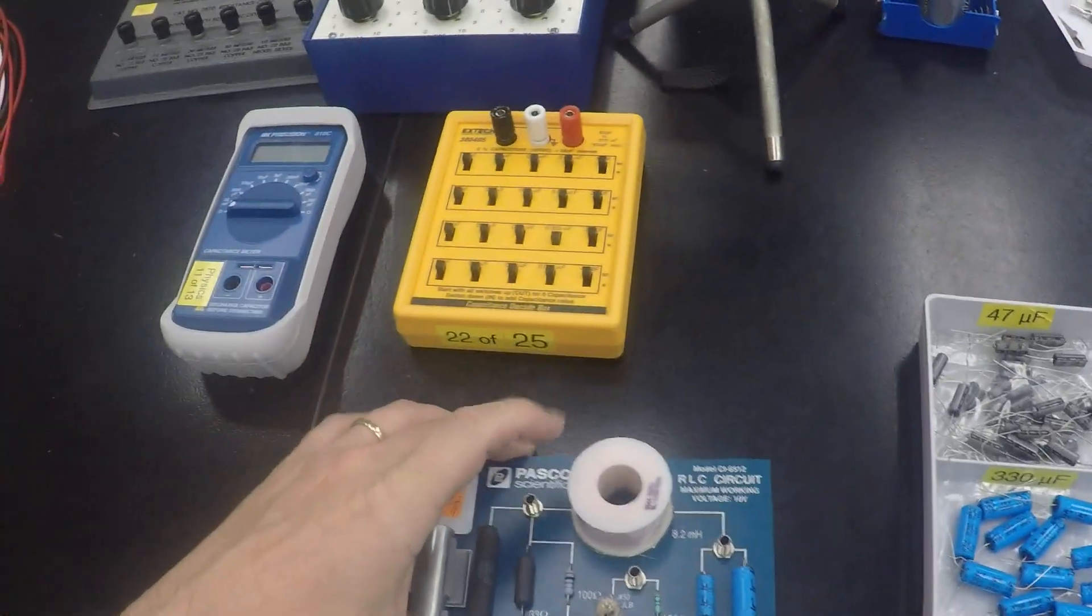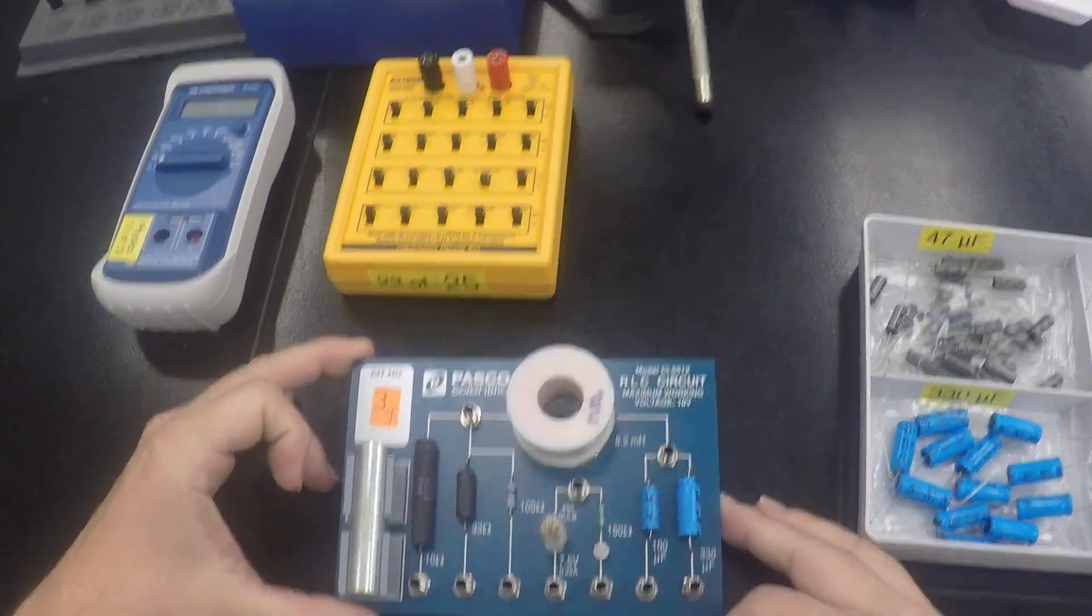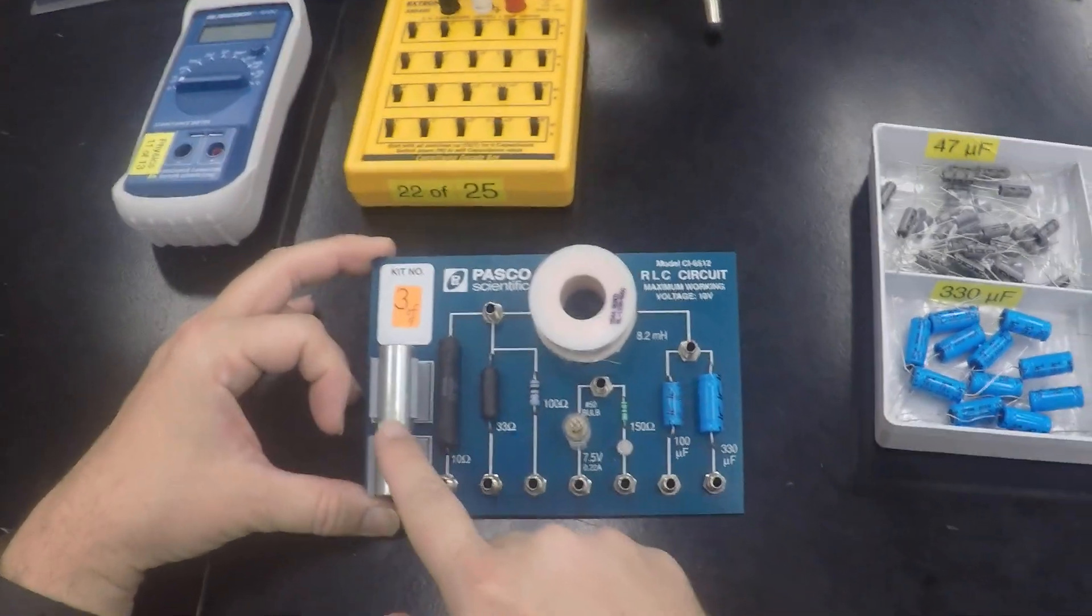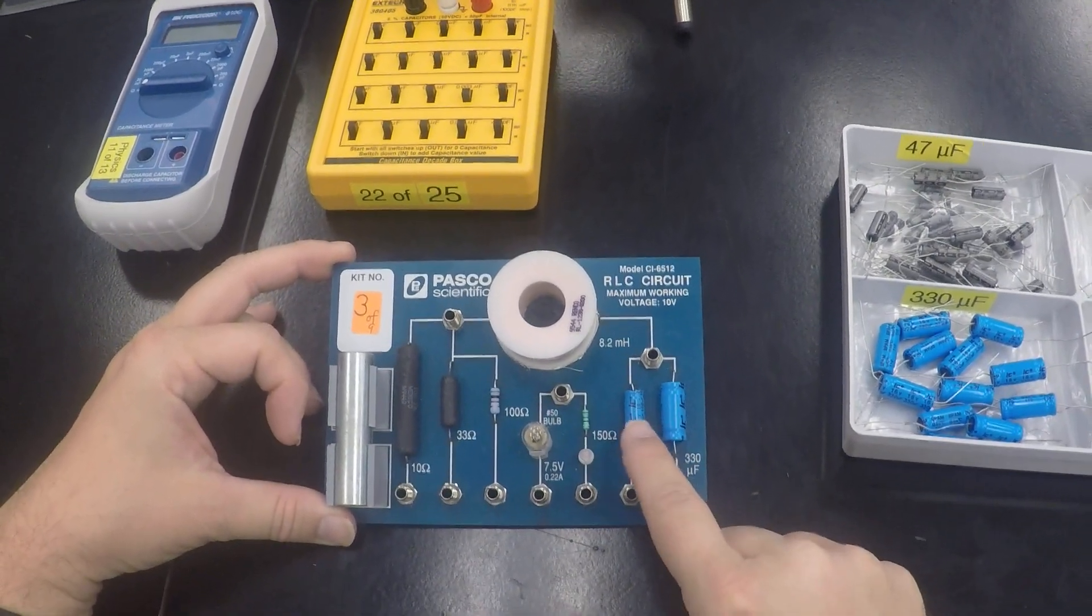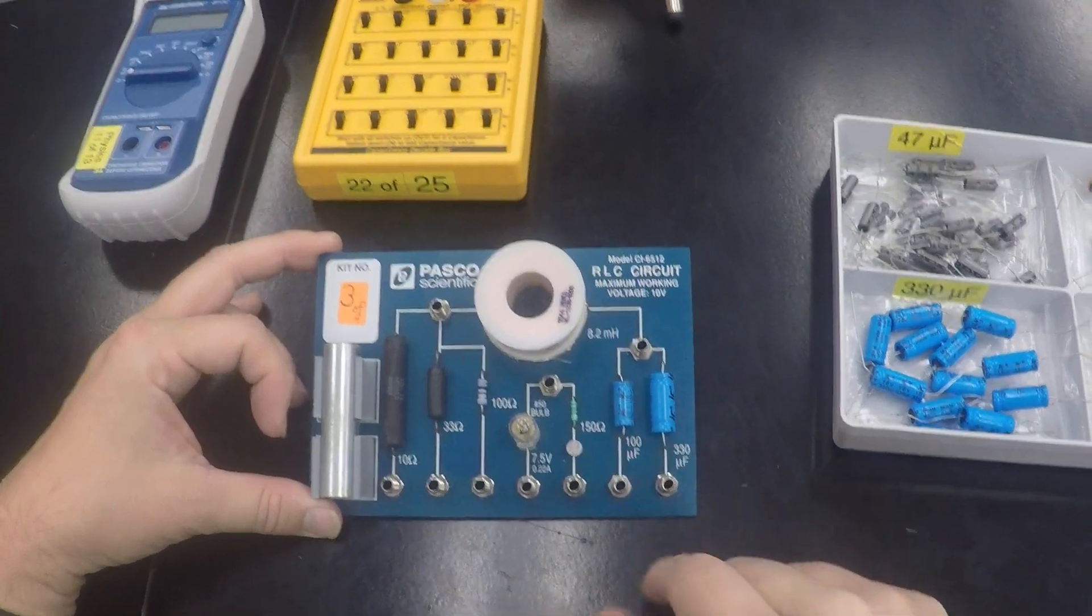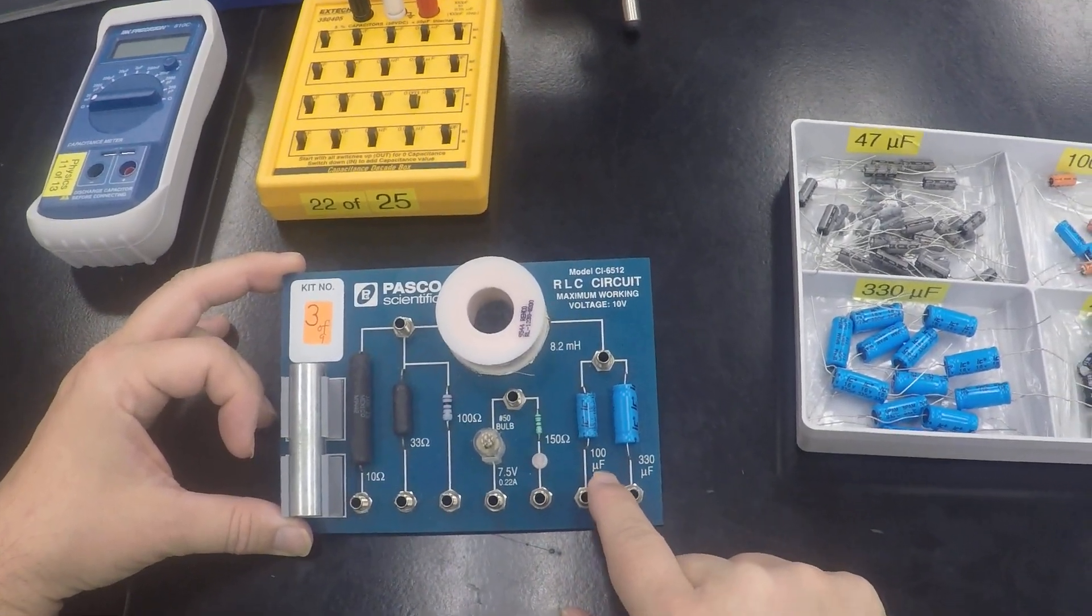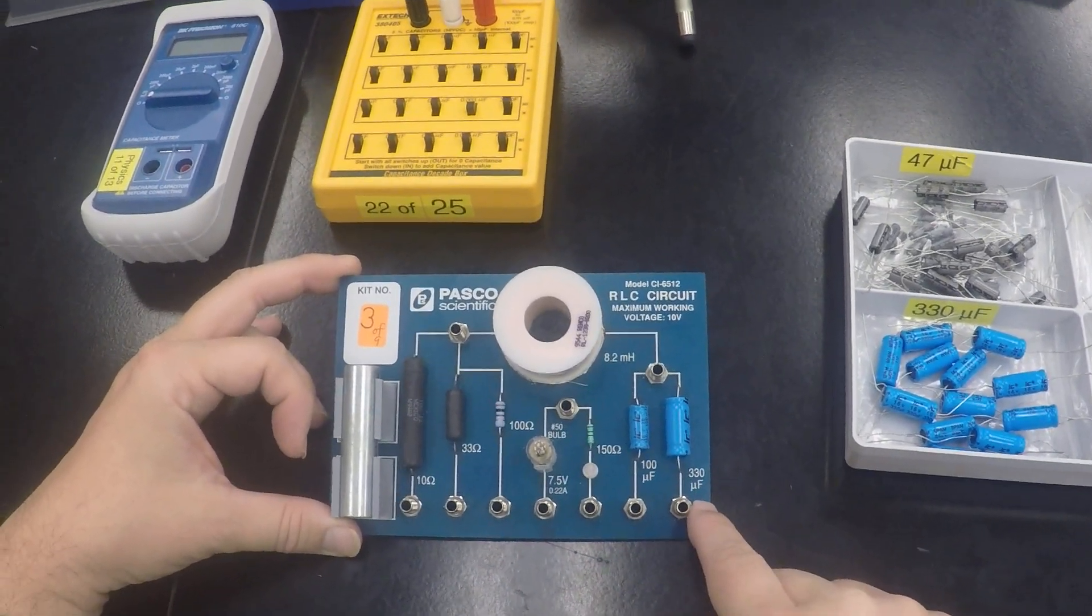We also have a circuit board, whereas it has various components that are mounted to it. Our subject of interest right now are the two that are mounted over here. So they're rated at 100 microfarad and 330 as you see.